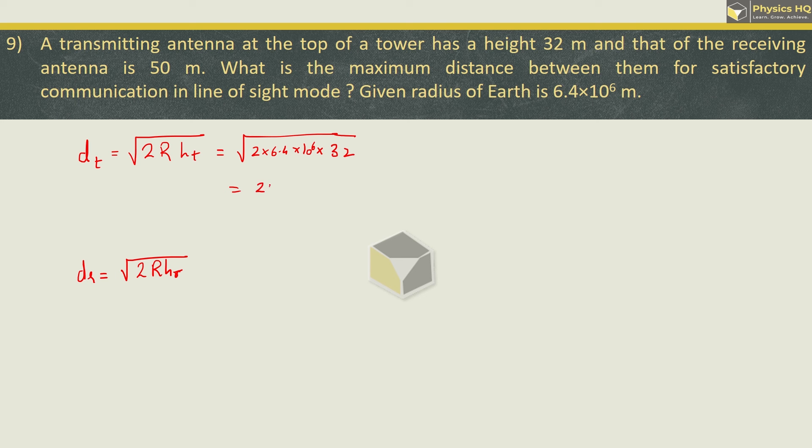This is equal to root of 2 times 6.4 into 10 raise to 6 times 32. When you solve this you will get 20.238 into 10 raise to 3 meter or 20.238 km. Similarly for receiving, root of 2 times 6.4 into 10 raise to 6 times height 50. When we solve this we will get 25.298 into 10 raise to 3 meter or 25.298 km. So the total range is range of transmitting plus range of receiving antenna. This is 20.238 plus 25.298 which will be 45.536 km.